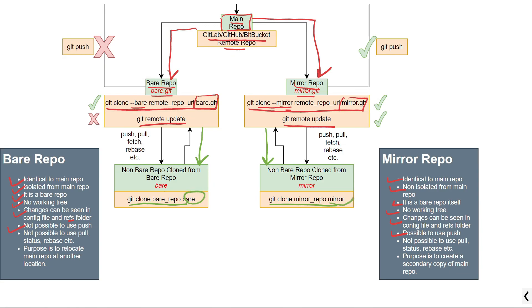Here, bare and mirror are the folder names in which we copy the content of the respective bare or mirror repository. All different options like git push, pull, fetch, and rebase can be utilized in these non-bare repositories, because these are your normal repositories. After creating non-bare repositories from either a bare or mirror repository, if you make some changes and use git push to push from the non-bare repository to the bare or mirror repository, that is possible.